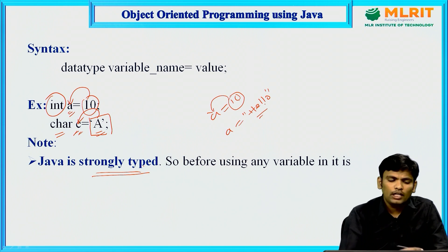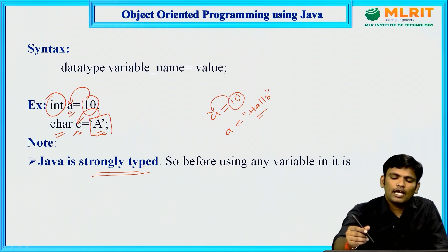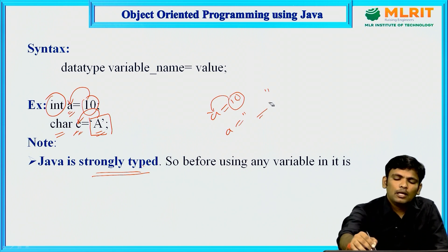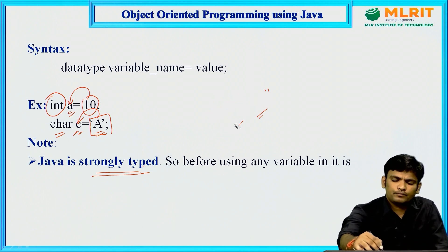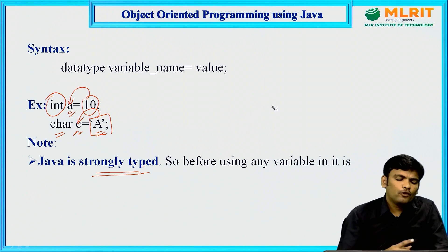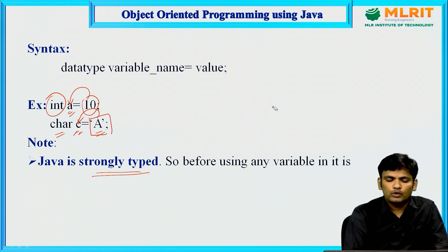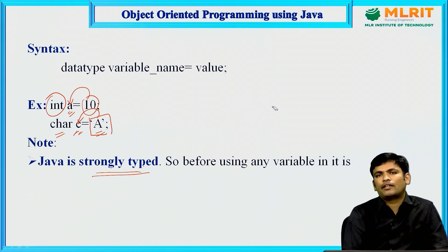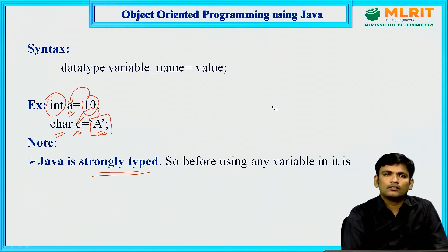In a strongly typed programming language like Java, before using any variable in a program, you must compulsorily declare that variable. Only then can you access it; otherwise it creates a compile-time error.